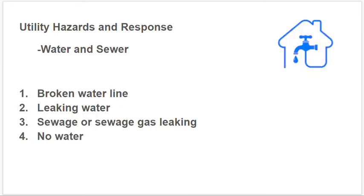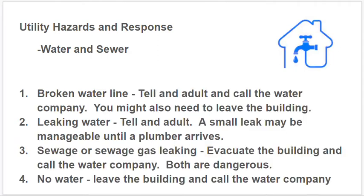The next utility is water and sewer. Some typical problems are a broken water line, leaking water, sewage or gas leaking, and no water. For a broken water line, tell an adult and call the water company — you might also need to leave the building. For leaking water, tell an adult. A small leak may be manageable until a plumber can arrive.